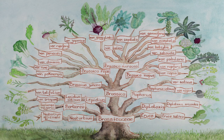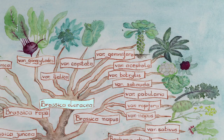The cabbage is a member of the Brassica oleracea species and the Capitata subspecies. The Brassica oleracea species also includes kohlrabi, broccoli, Brussels sprouts, kale, cauliflower and the Savoy cabbage.